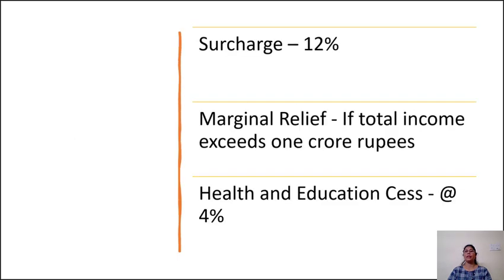Surcharge at the rate of 12% of income tax is applicable if total income exceeds rupees 1 crore. Marginal relief: if total income exceeds 1 crore rupees, the total amount payable as tax and surcharge shall not exceed the total amount payable on a total income of 1 crore rupees by more than the amount of income that exceeds 1 crore rupees.